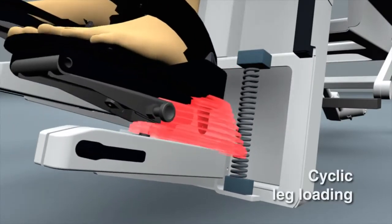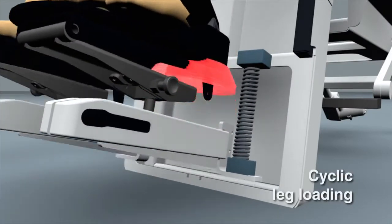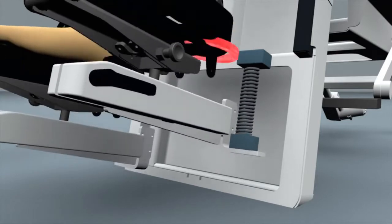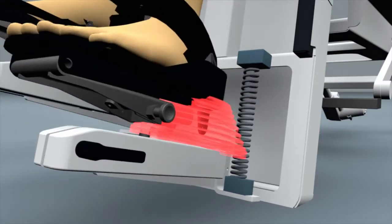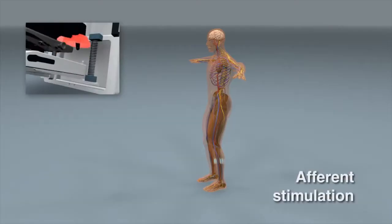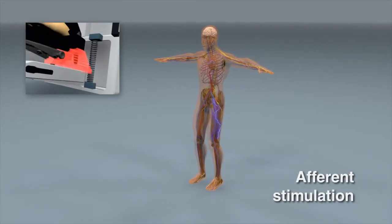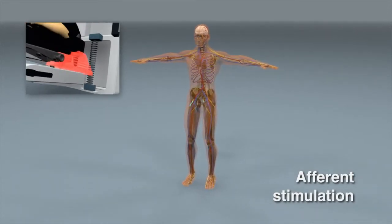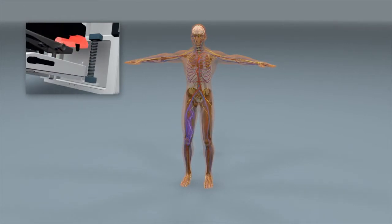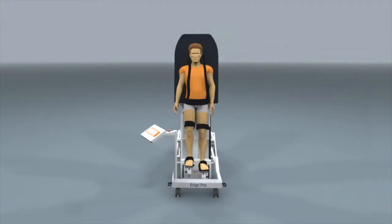The cyclic leg loading that is applied during mobilization enhances the stimulation of the patient. This unique afferent stimulation provided by the Erigo activates the central nervous system of the patient, which in turn stimulates the muscles of the lower extremities.